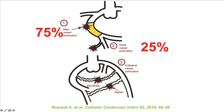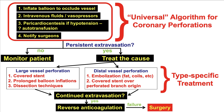In a recent analysis from our center, 75% of coronary perforations were large vessel perforations, with 25% being distal vessel perforations. How to approach a perforation should it occur? There is a so-called universal algorithm that describes essential steps regardless of the mechanism of perforation. If those measures fail to achieve hemostasis, there are type-specific treatments for large vessel and distal vessel perforation. If everything fails, then cardiac surgery might be required.